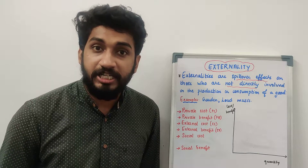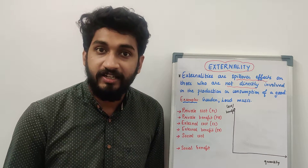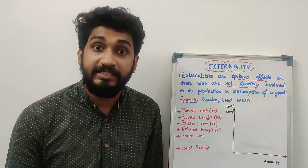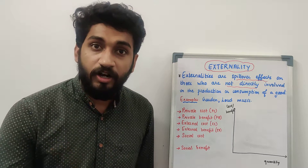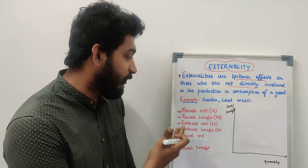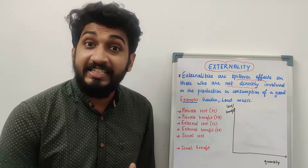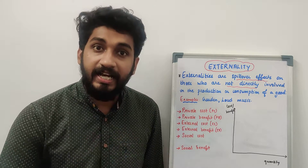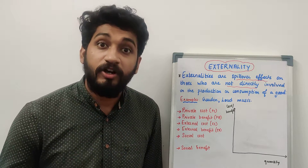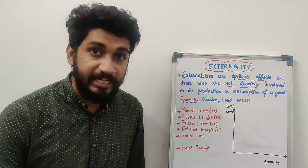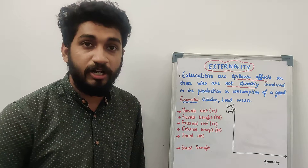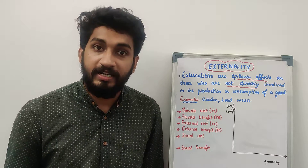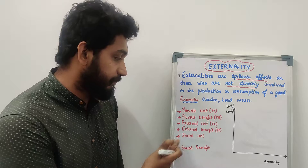Private benefit is the satisfaction or utility that you derive from the consumption of a good. For the producer, it is the reward — the price and profit he gets from production. That is what comes under private benefit. External cost refers to spillover effects on third parties not involved in buying and selling who are nonetheless affected and bear a cost due to their surroundings. External benefit is like the garden example, where we gain a benefit without paying anything — that comes under the category of external benefit.